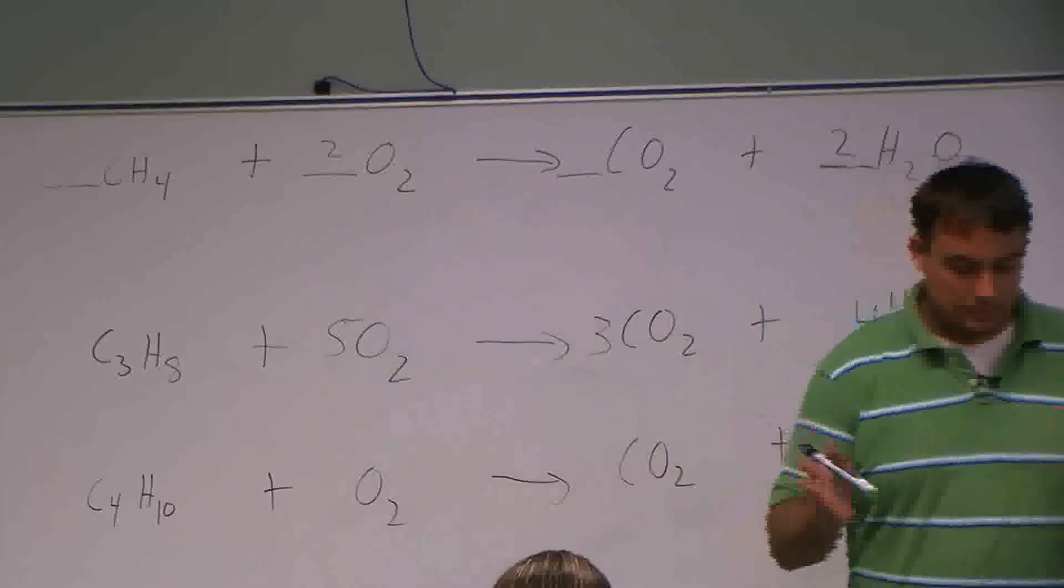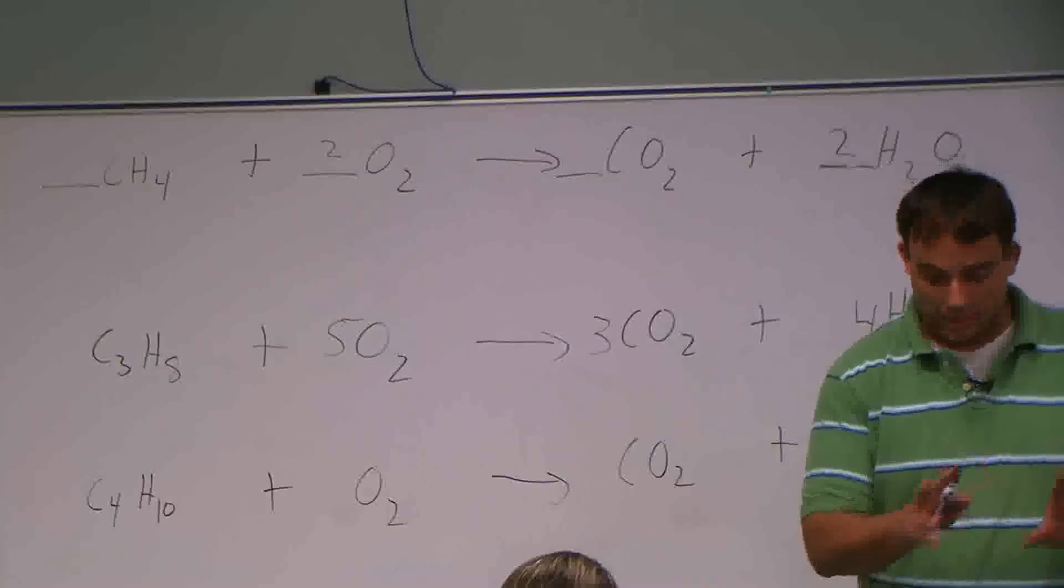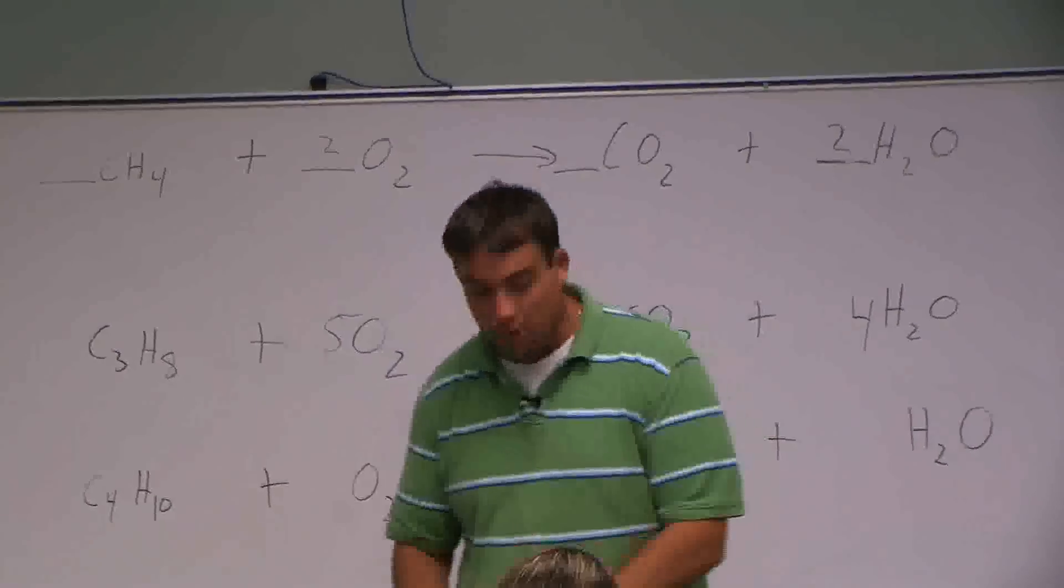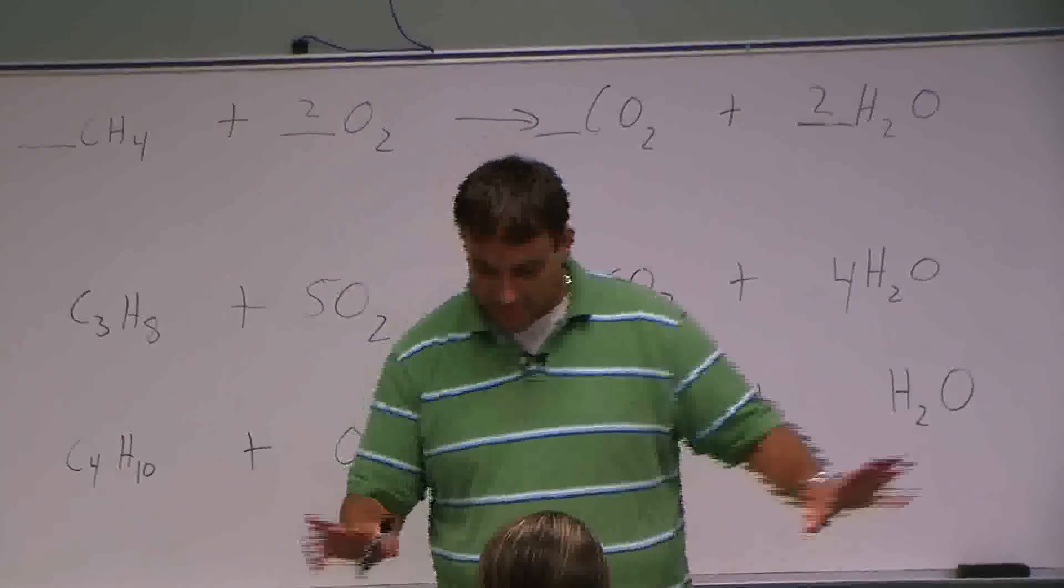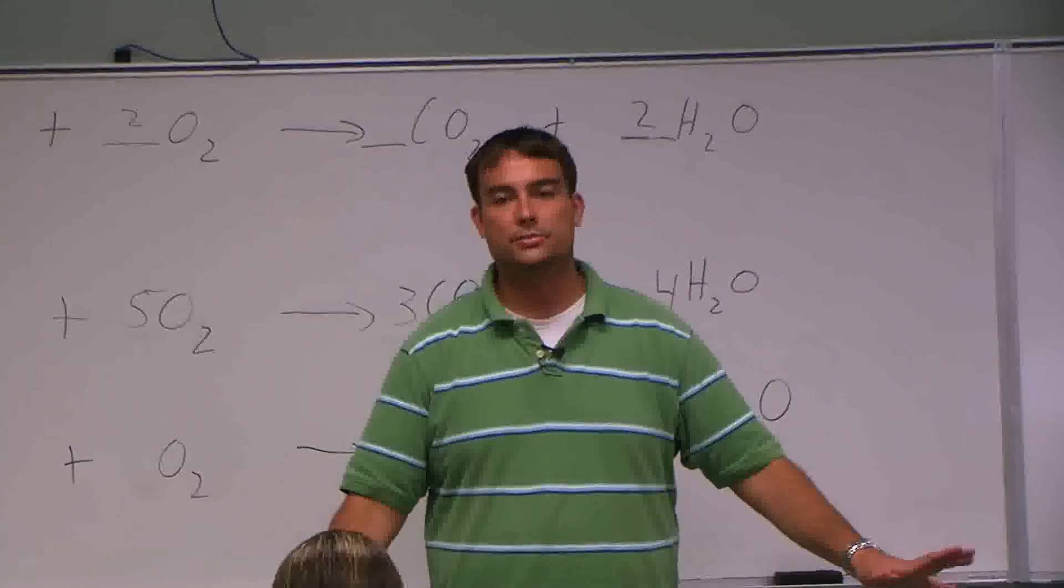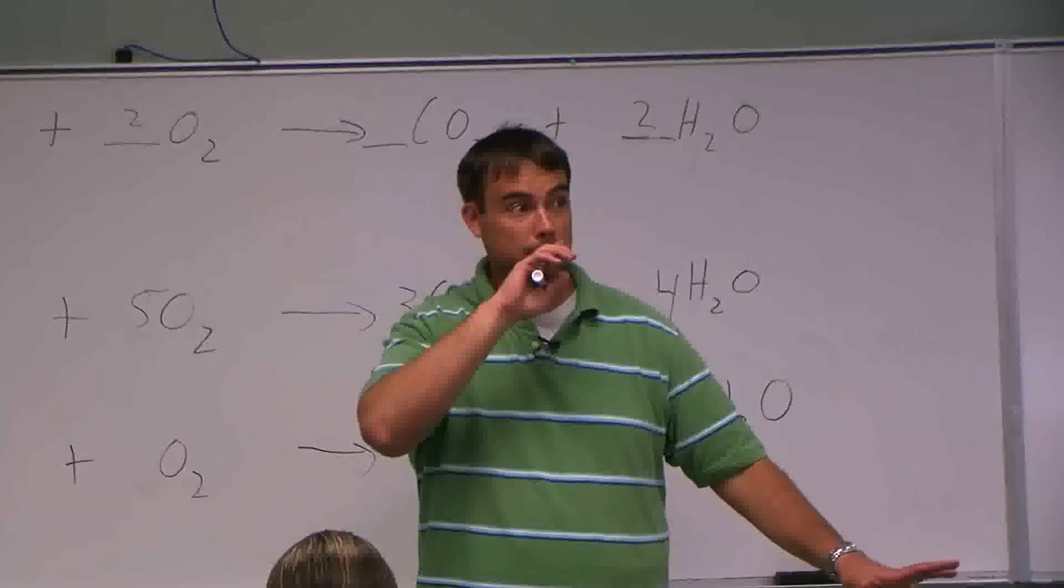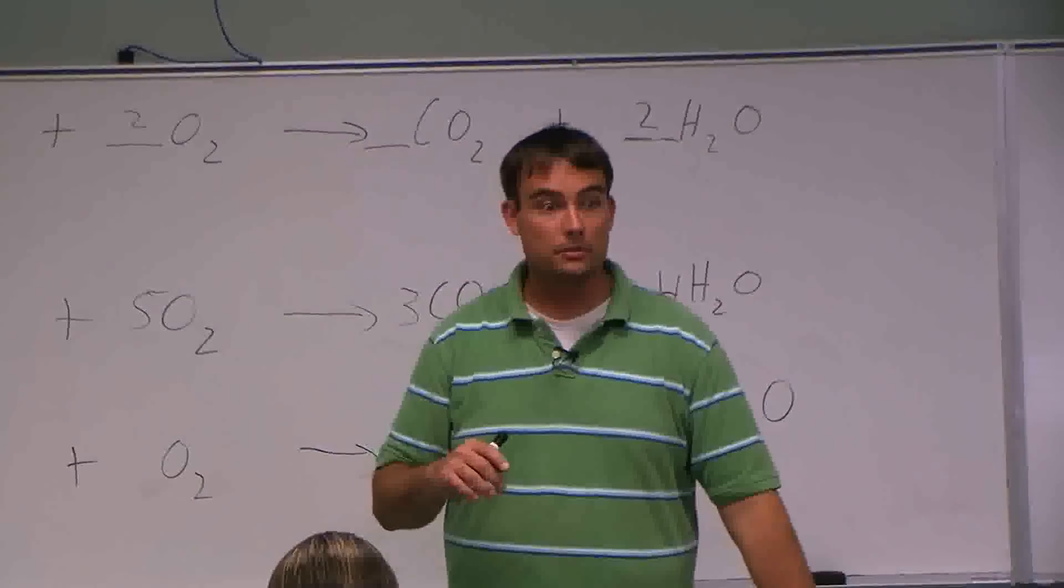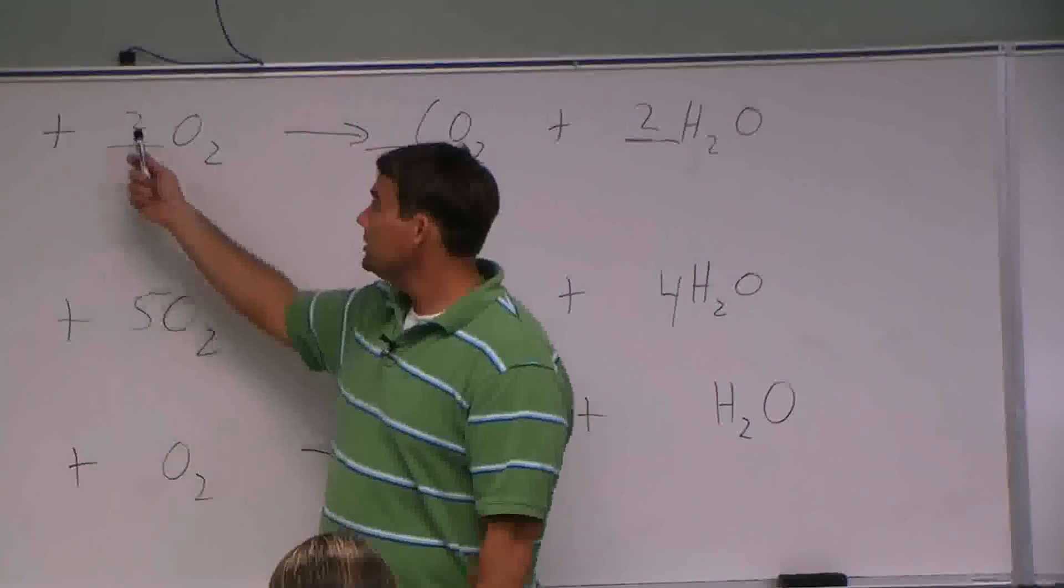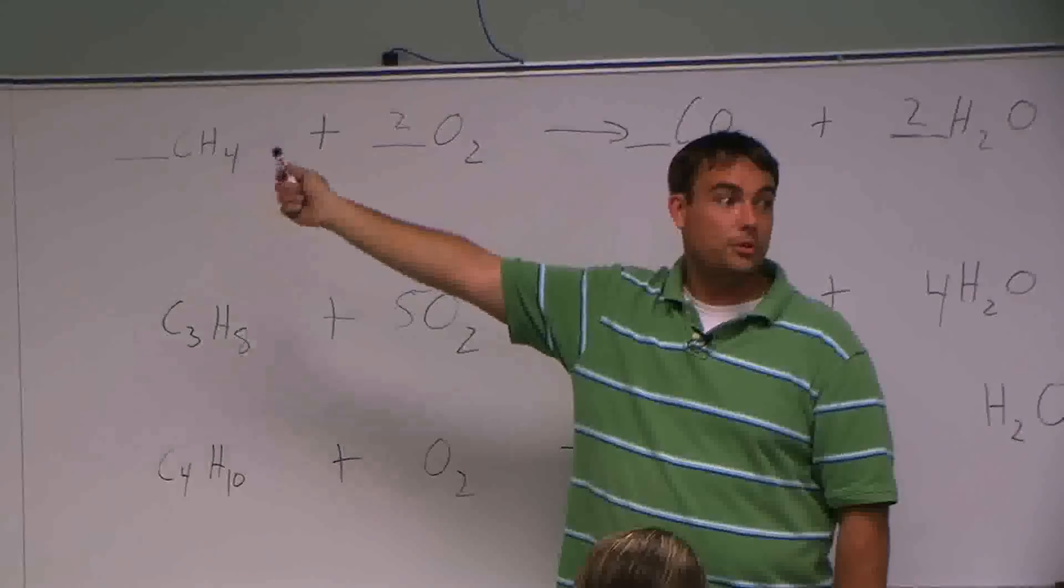If John had a tank of methane in his backyard, and Bella had a tank of propane in her backyard, and they cooked the same amount of things, who would run out of gas first? John would. Right? Because John's only using a little bit of oxygen to methane, actually a one-to-two ratio.